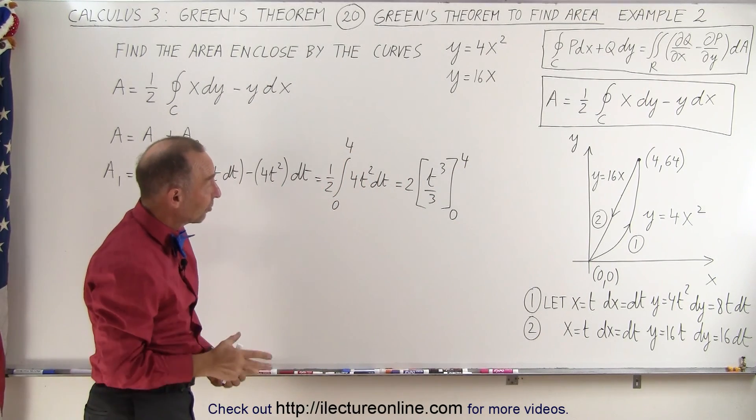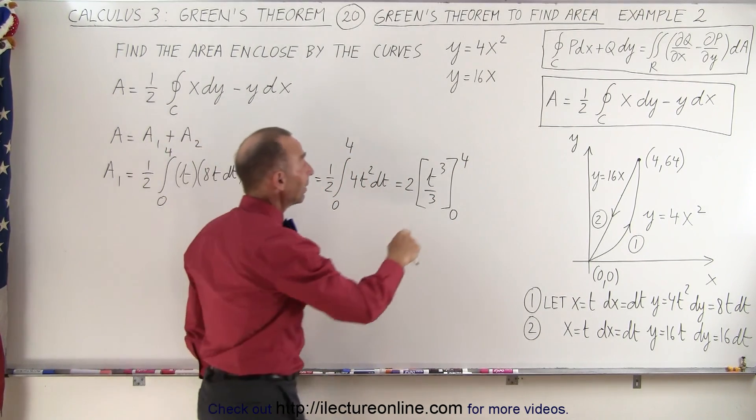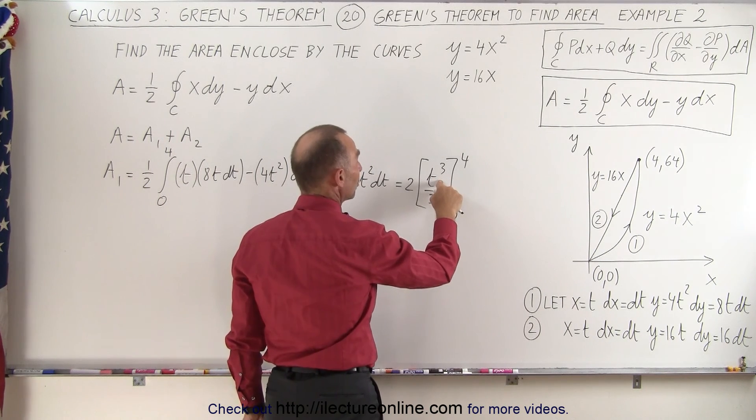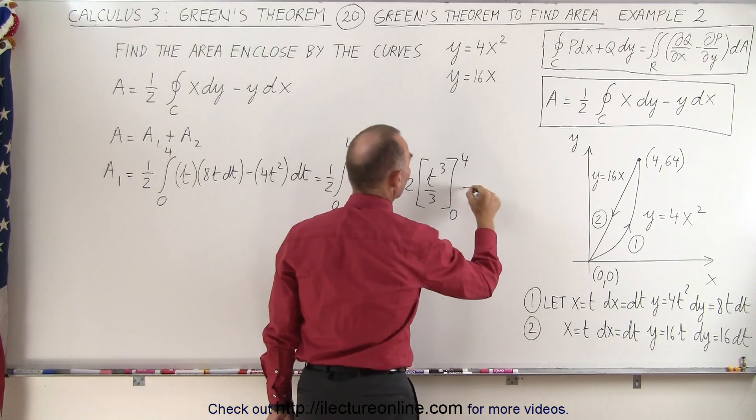When we plug in the lower limit, we get zero. Plug in the upper limit, we get 4 cubed, which is 64 times 2, 128 divided by three.